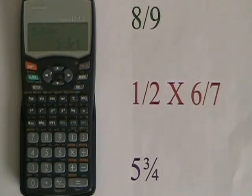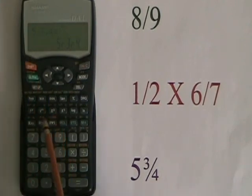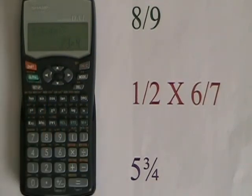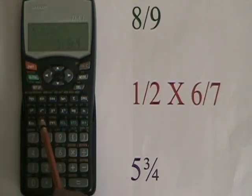To convert between mixed number and improper fraction, we can do second function, ABC, and 5 and 3 quarters is converted into 23 quarters. We can go back and forth as many times as we want with second function, ABC.